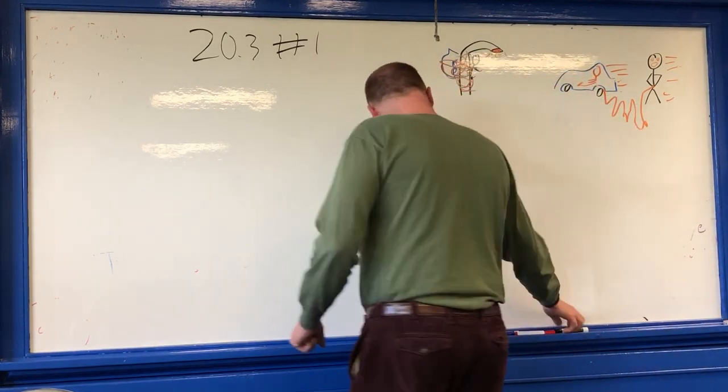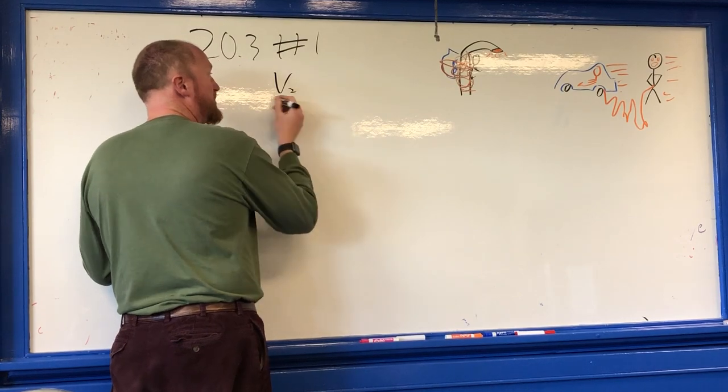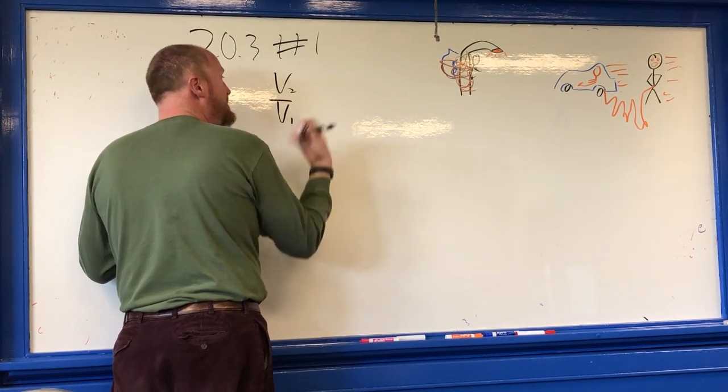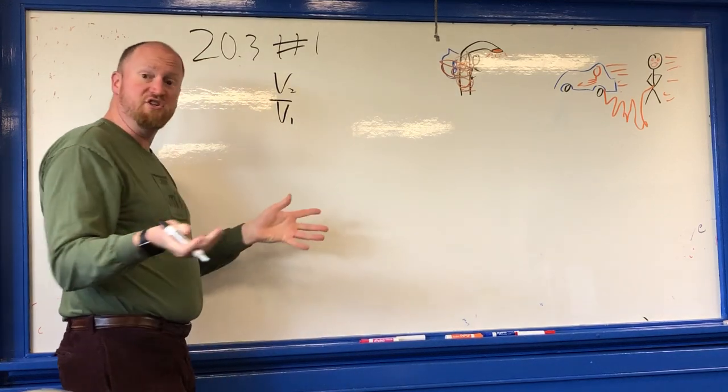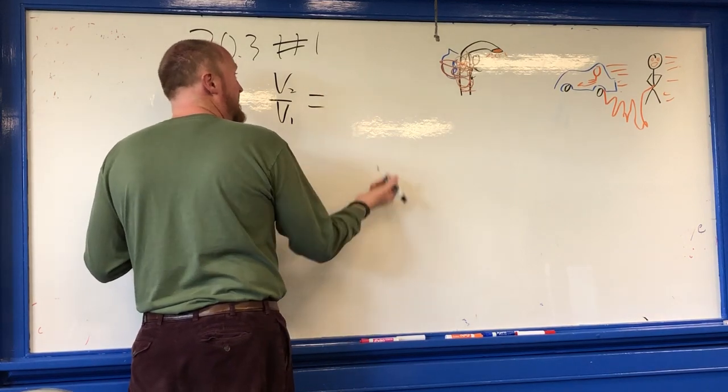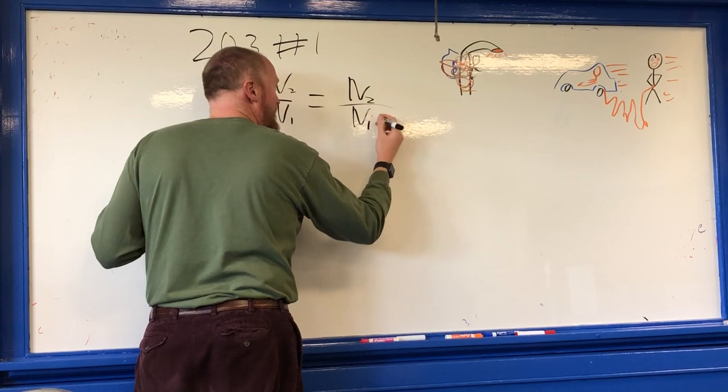Now, if you remember, the voltage in the secondary coil, which is the coil around the car, over the voltage in the primary coil, which is your coil, which is the one you're hooking up to the 120 volts going through your lamp, is equal to the number of secondary coils over the number of primary coils.